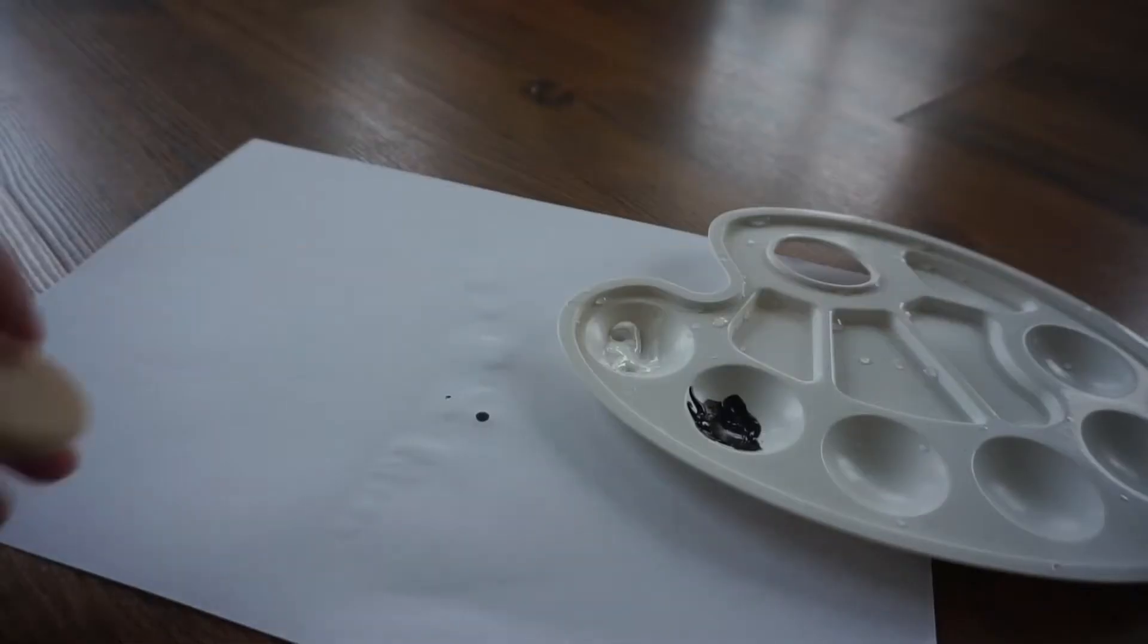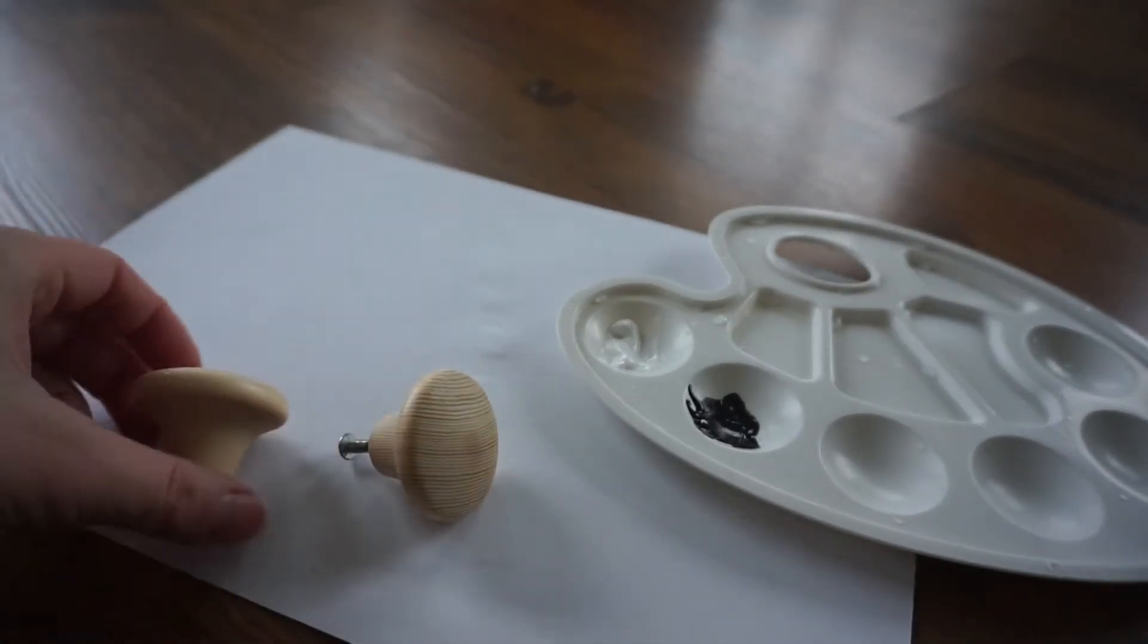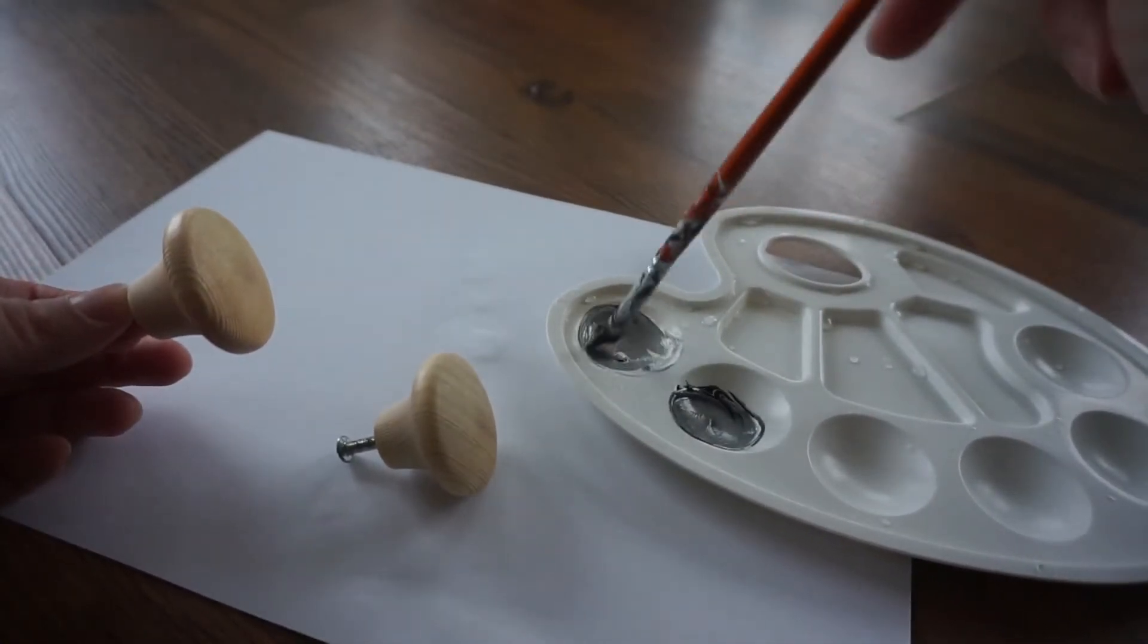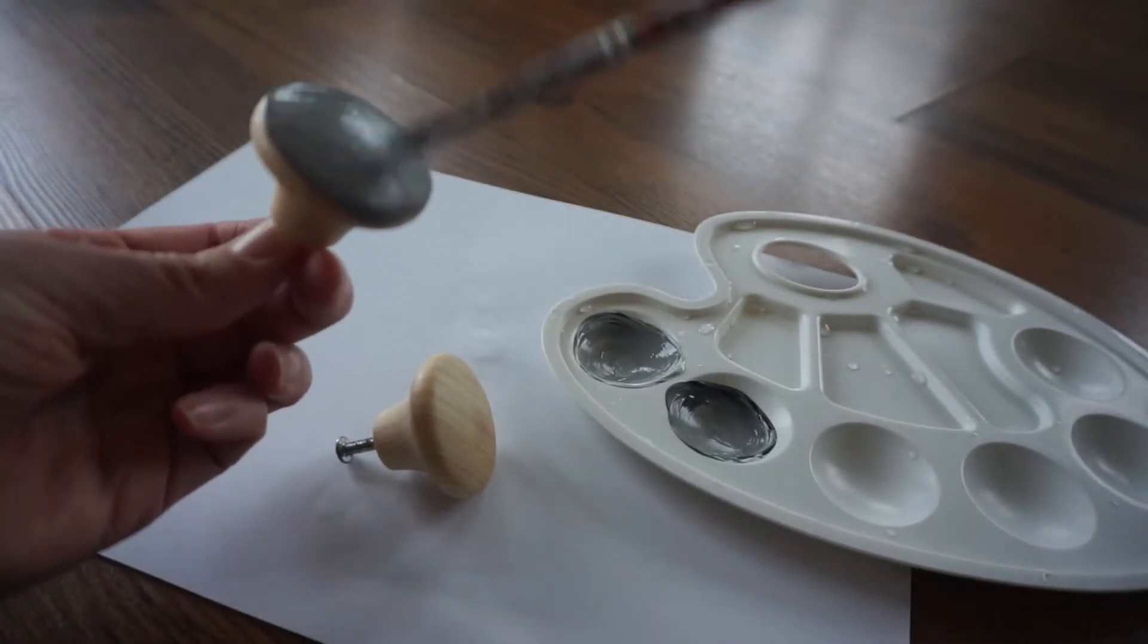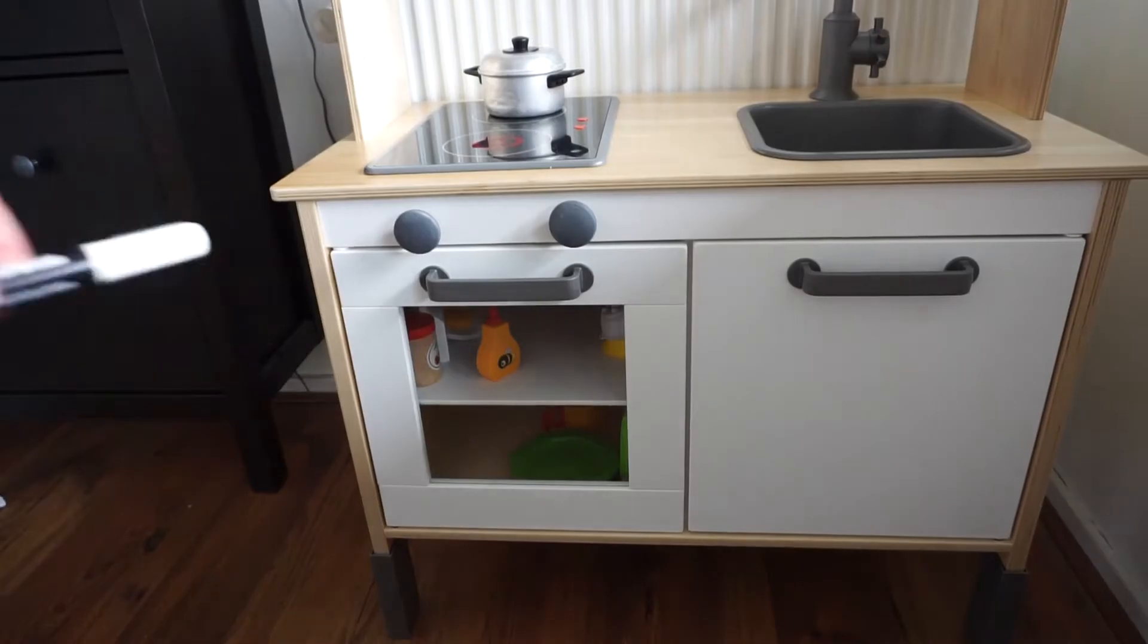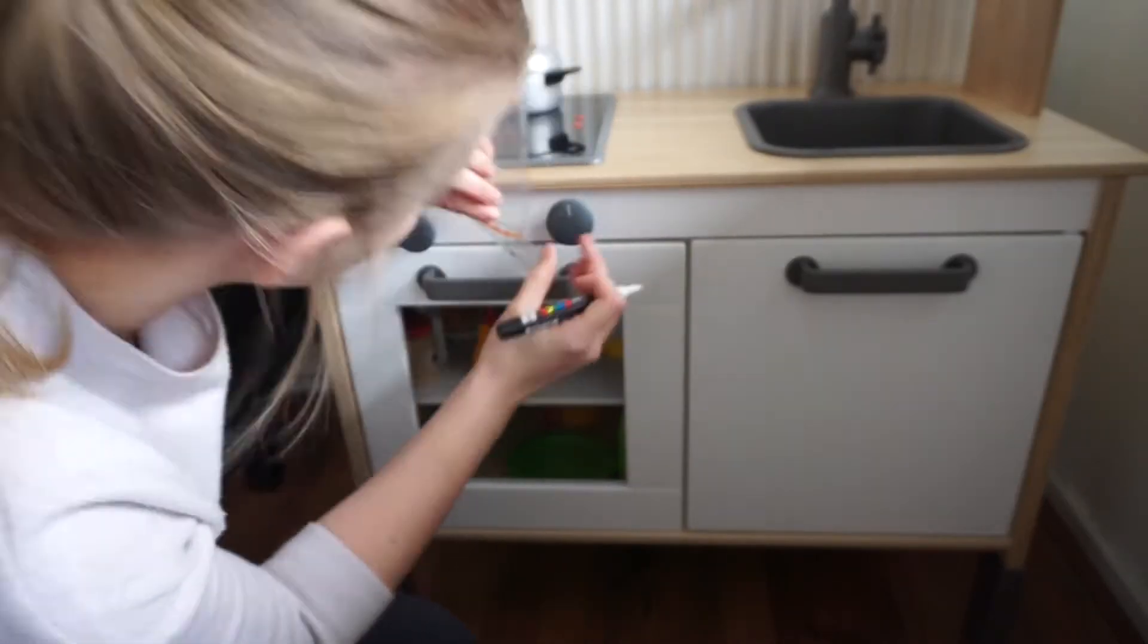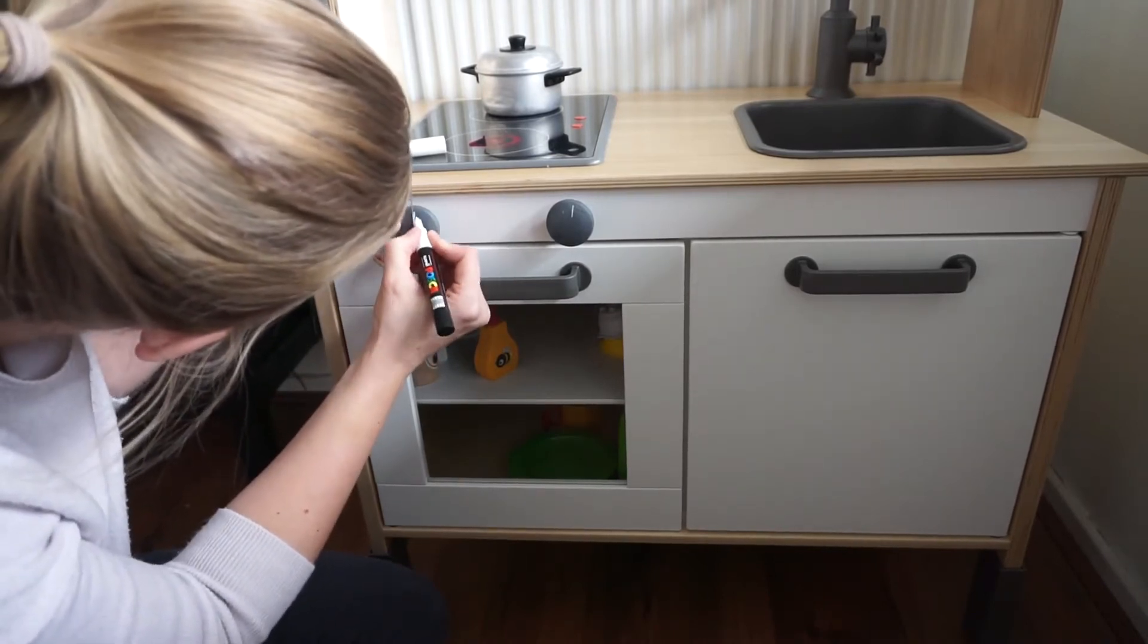Für das zweite Projekt haben wir im Baumarkt Holzknäufe gekauft und die habe ich dann mit Acrylfarbe Grau angemalt. Dann hat mein Mann die Knäufe an die Küche angebohrt als Schalter für den Backofen. Mit einem weißen Posca-Pen habe ich die Schalter noch markiert. Nun kann in der Küche gedreht und geschaltet werden und farblich passen die Knäufe gut zu den restlichen Armaturen.